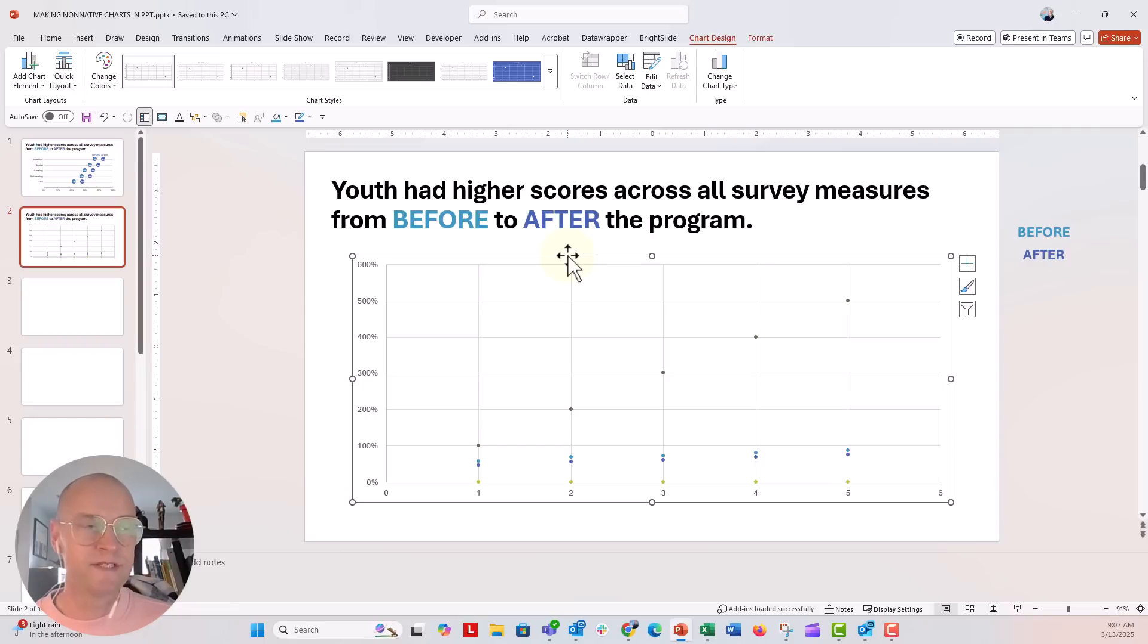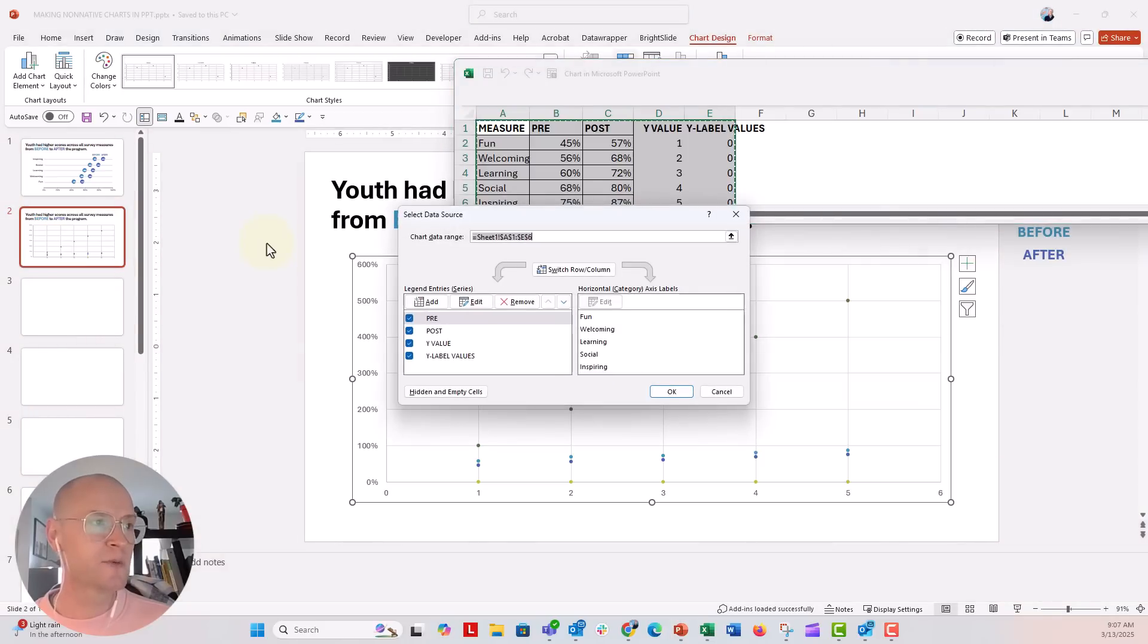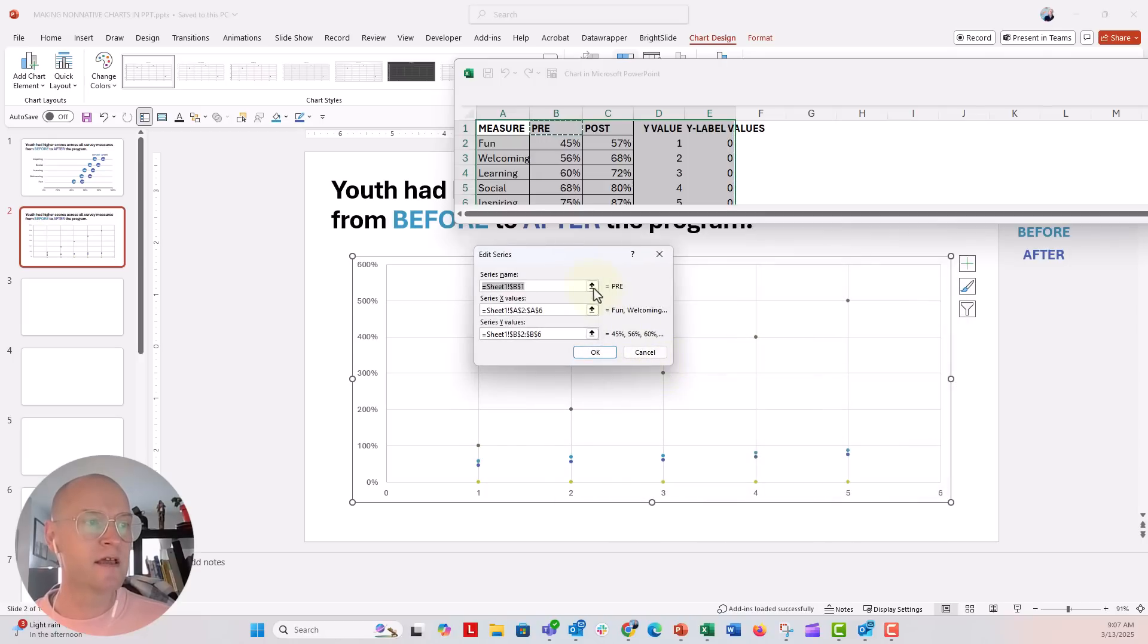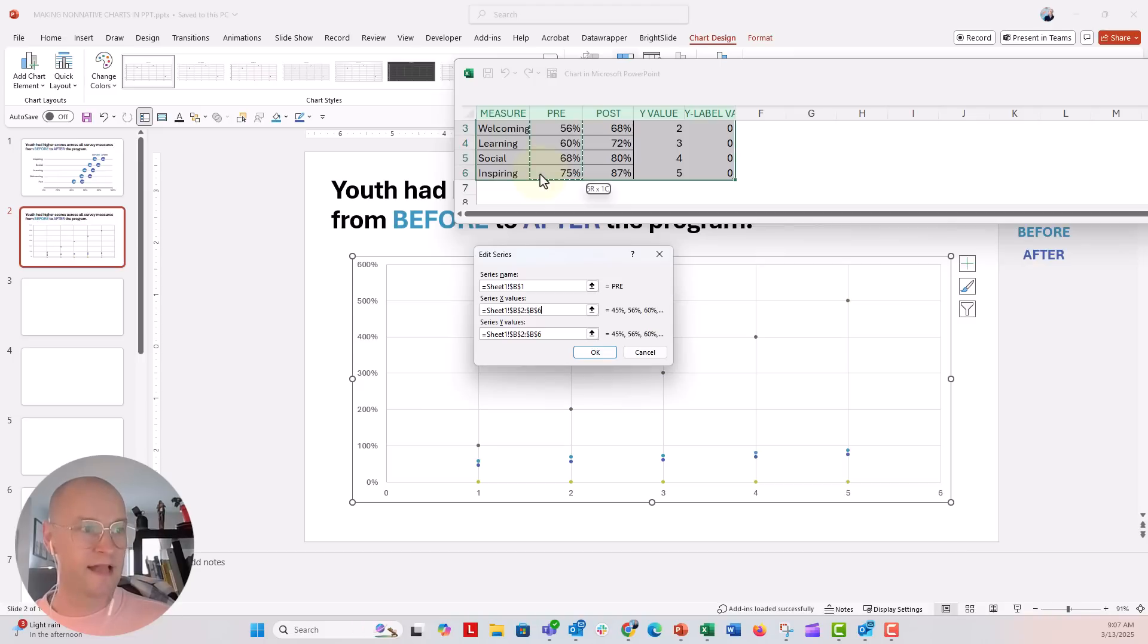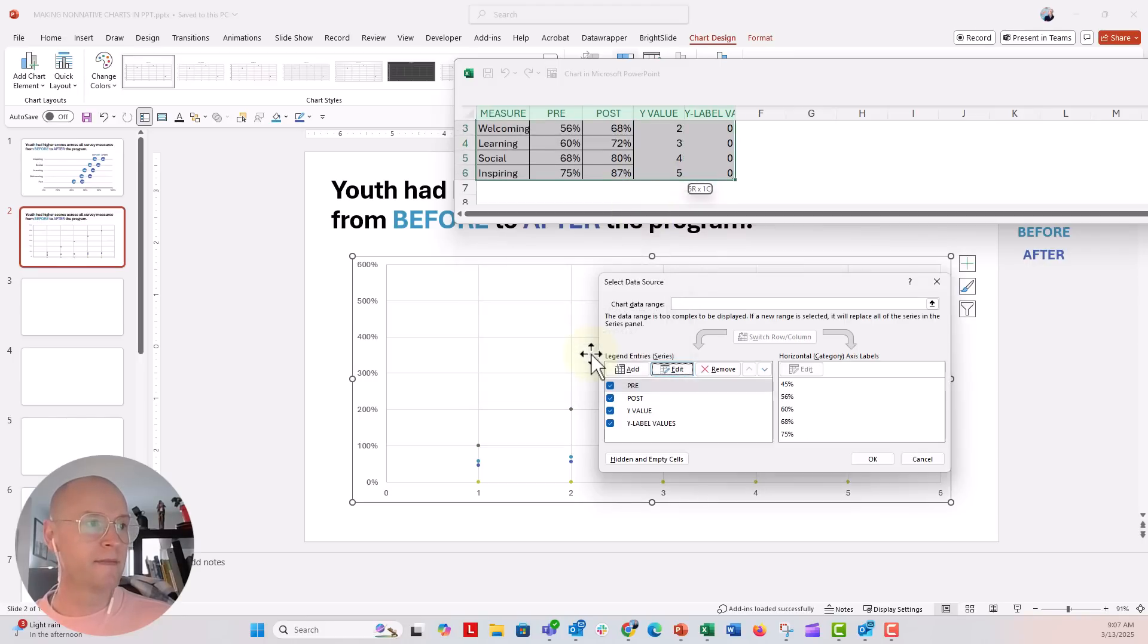With my chart selected, I'll click select data and the window pops up. Here's my data source window, and here's my select data source window. On the pre data, I'm going to click edit. I'll make sure it's set to pre. My X values are not going to be the words, they're going to be the data right here. The Y values, I'm going to point to my column in D.